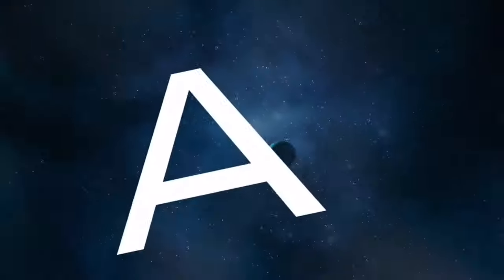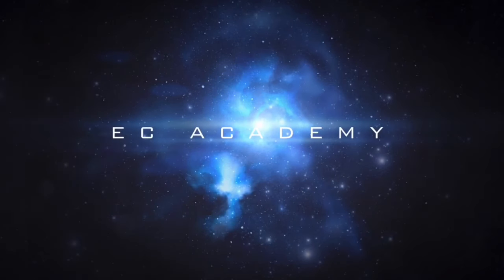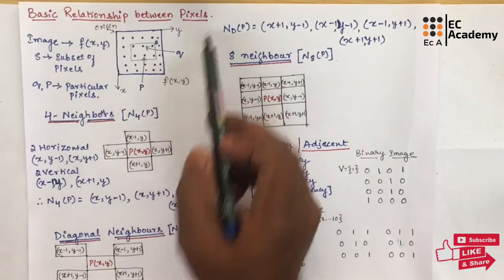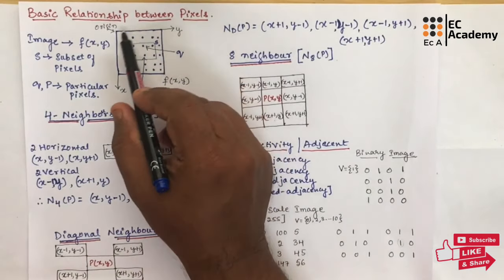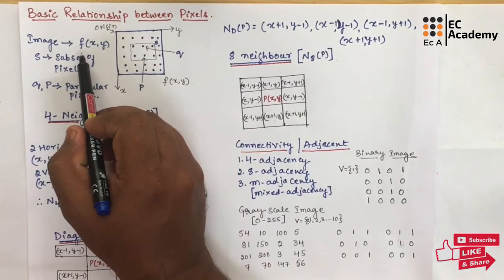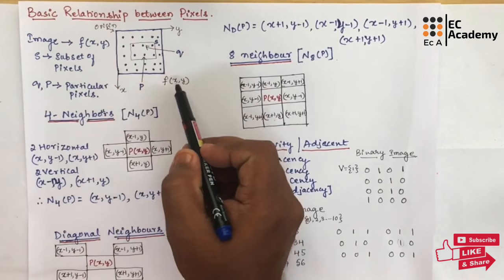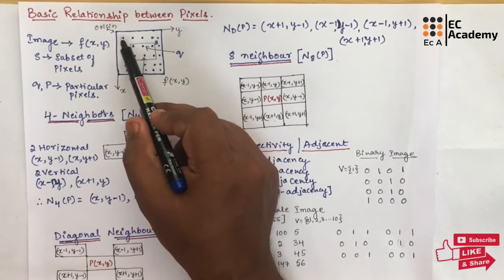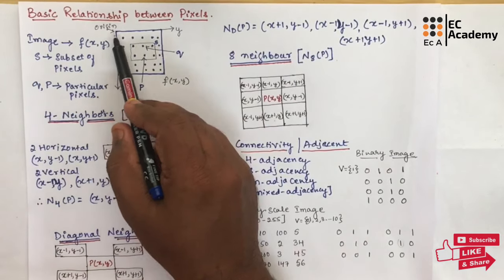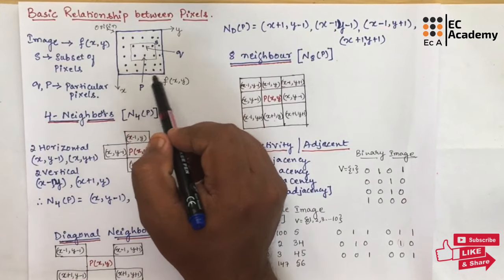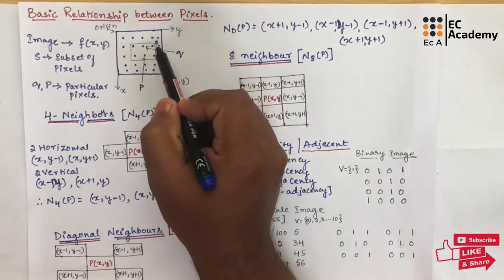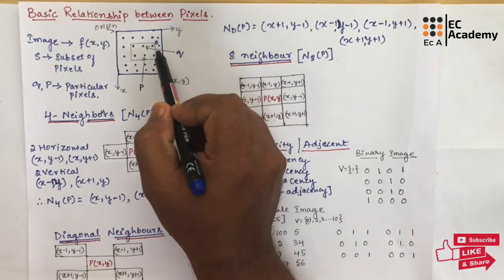Hello friends, welcome to EC Academy. In this lecture, let us understand the basic relationship between the pixels. If we consider a digital image, we can define a digital image as a two-dimensional function f of x comma y. Here x represents the column and y represents the rows in the digital image. In this digital image, we will be having a number of pixels, and a group of pixels we can call a subset.